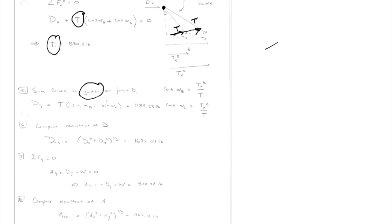We're going to compute some resultant forces so we can compute the shear in the pins. We compute the resultant at D by taking the square root of the sum of the squares of the X and Y components. That gives the total shear force on the pin, which is in double shear, so we divide by two. We can also sum forces in the Y direction to solve for A sub y.